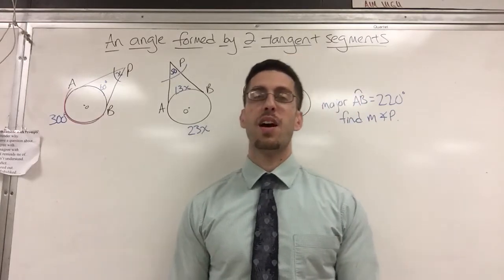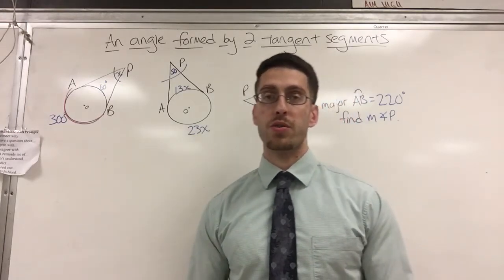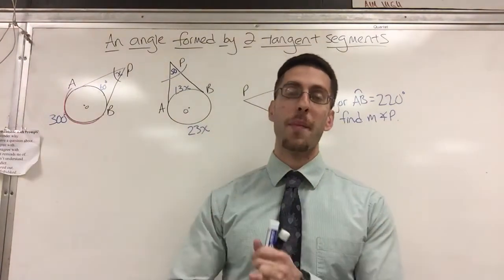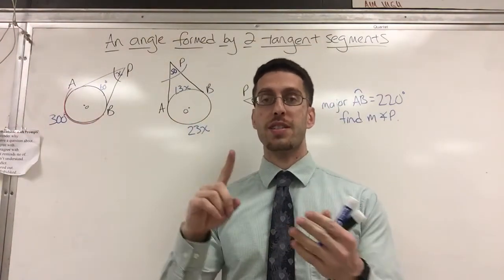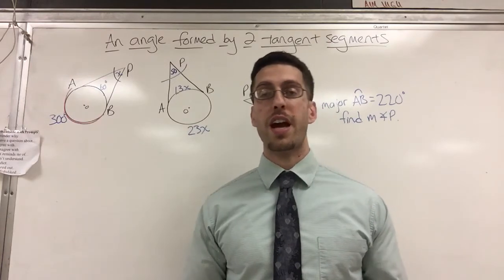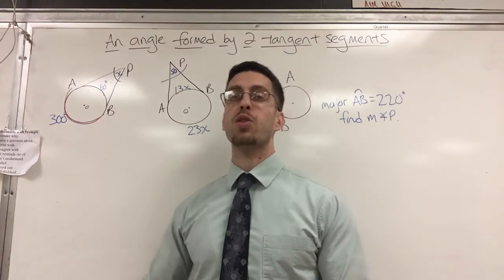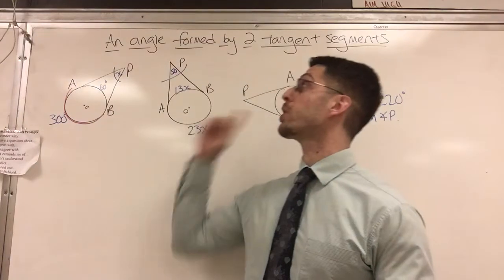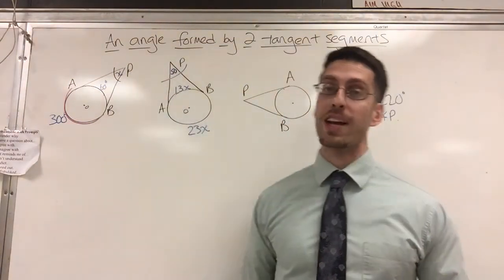What's up math fans? There's a lot going on in circles. There's radius, diameter, arc, tangent line, chord, and secant line which I haven't even gotten to yet. So I want to talk about what happens when two chords form an angle.